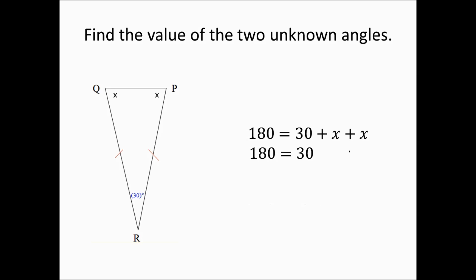So 180 equals 30 plus 2X after combining like terms. We then subtract 30 from both sides: 180 minus 30 gives us 150, and 30 minus 30 gives us 0, so we're left with 150 equals 2X.